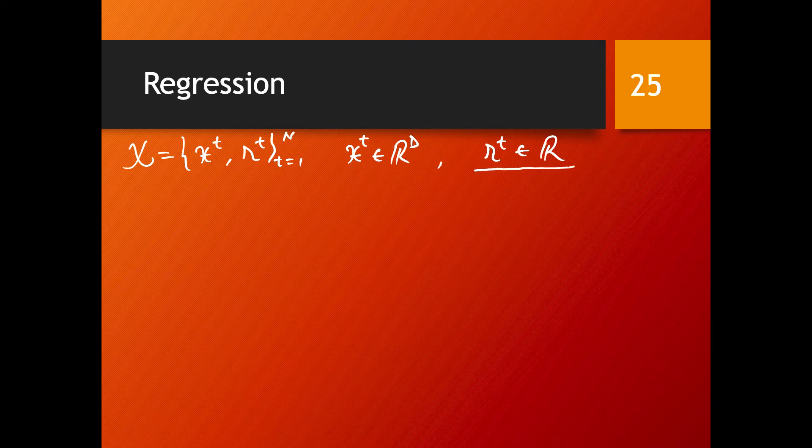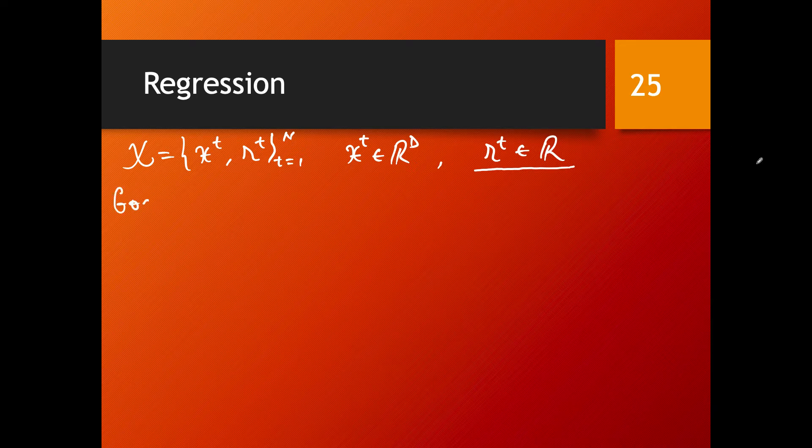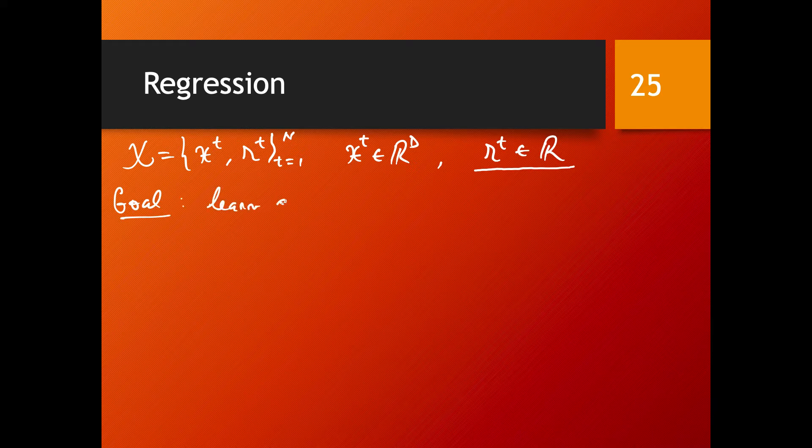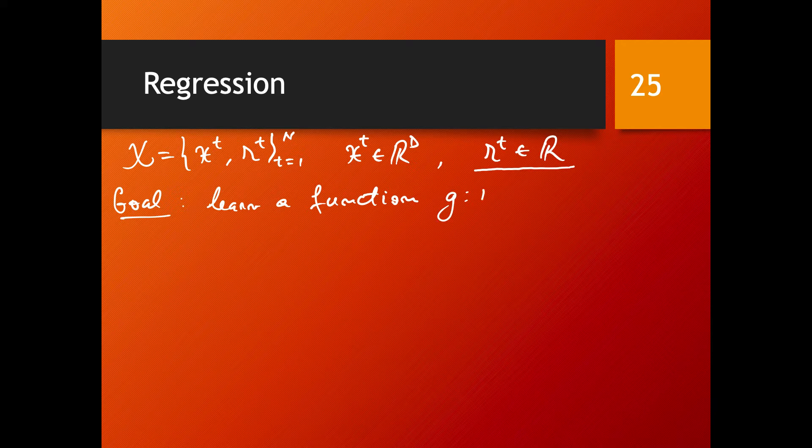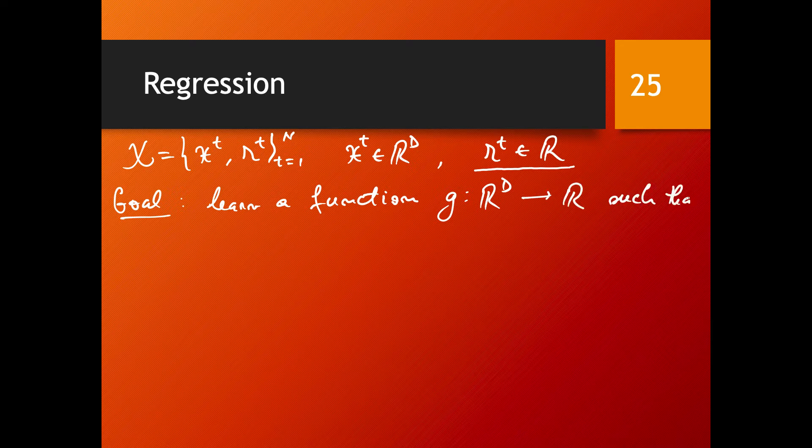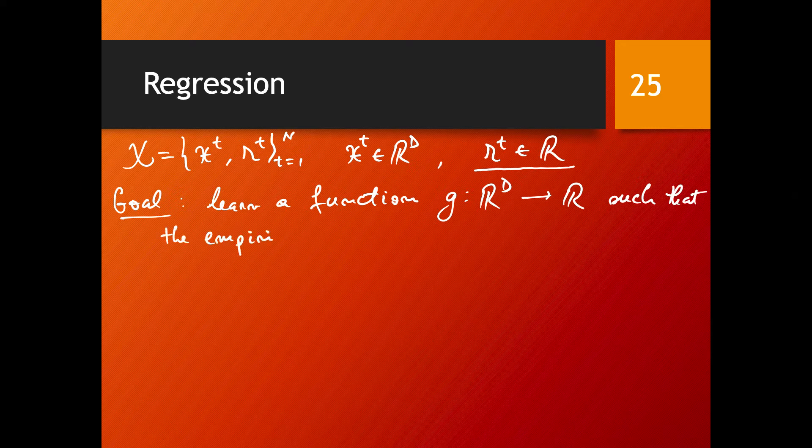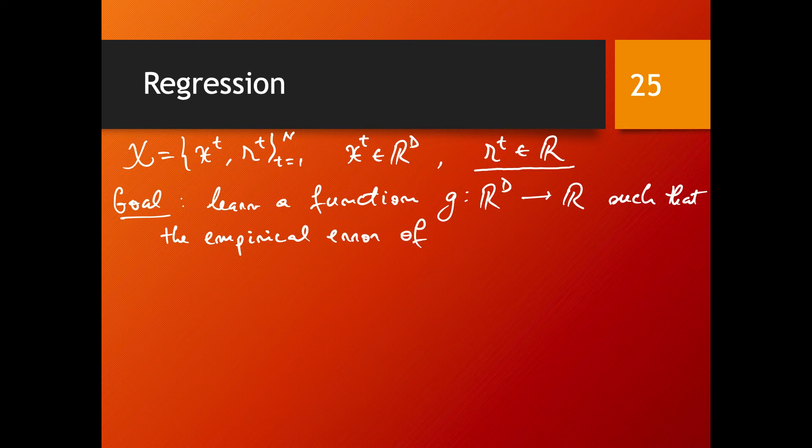This is where the fundamental difference is with respect to classification problems. The goal in a regression problem is going to be to learn a function RG defined on R to power D, so that's exactly the space where our samples are coming, with values in R, such that the empirical error is minimal.